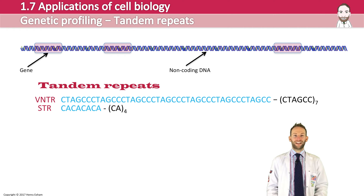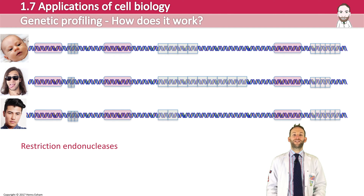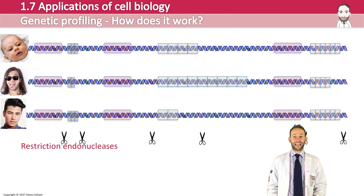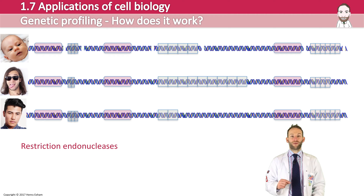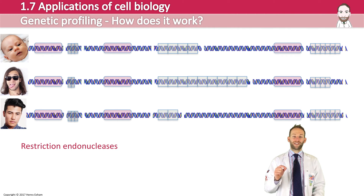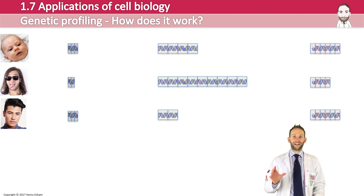The first step is to isolate the sections of DNA containing these repeats using restriction endonucleases. As mentioned in the genetic engineering video, these are enzymes that cut DNA at very specific points. So hopefully we can get the right restriction endonucleases to chop out the areas of the individual's DNA to isolate the short tandem repeats.